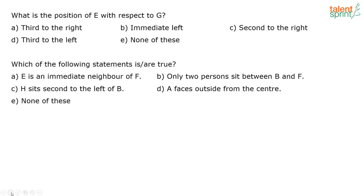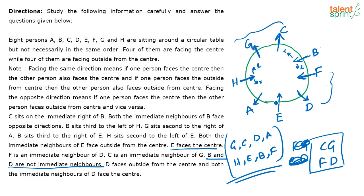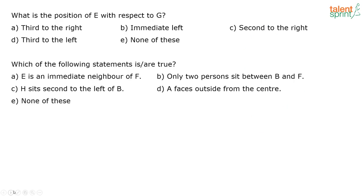First question: What is the position of E with respect to G? G is here, E is here. This is G's left and this is G's right. E is 1, 2, 3 — third to the left of G. So E is third to the left of G. That is option D.